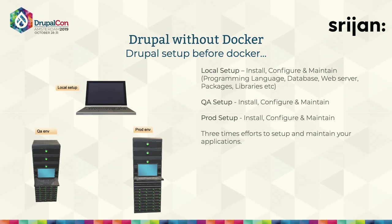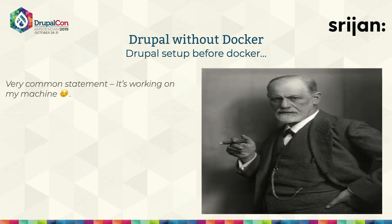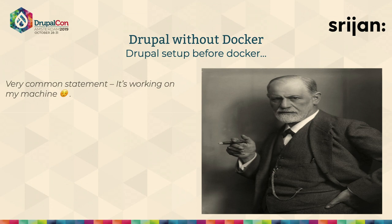Another common problem: developers say 'it was working on my machine' but somehow it's not working in any integration, QA, or production environment. We often don't have an answer to that scenario, because if we miss even a single library on which our code has a dependency, that creates the challenge. The code passes UAT on the developer's machine but fails in other environments.